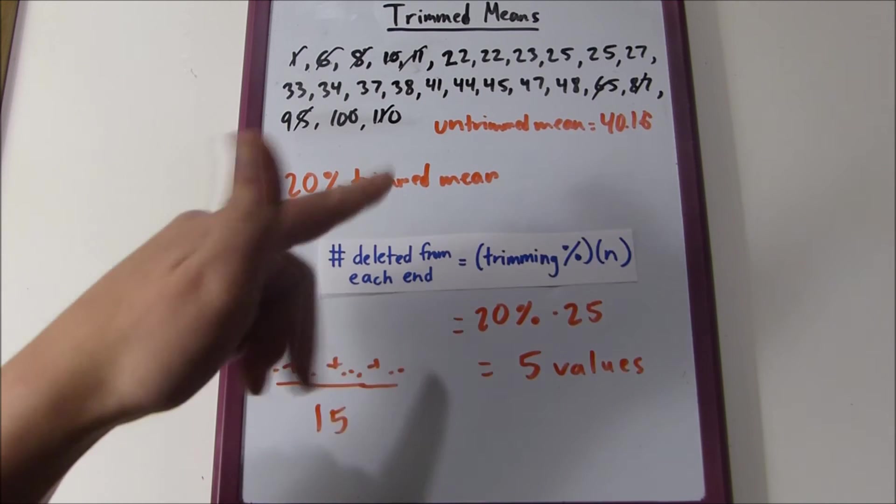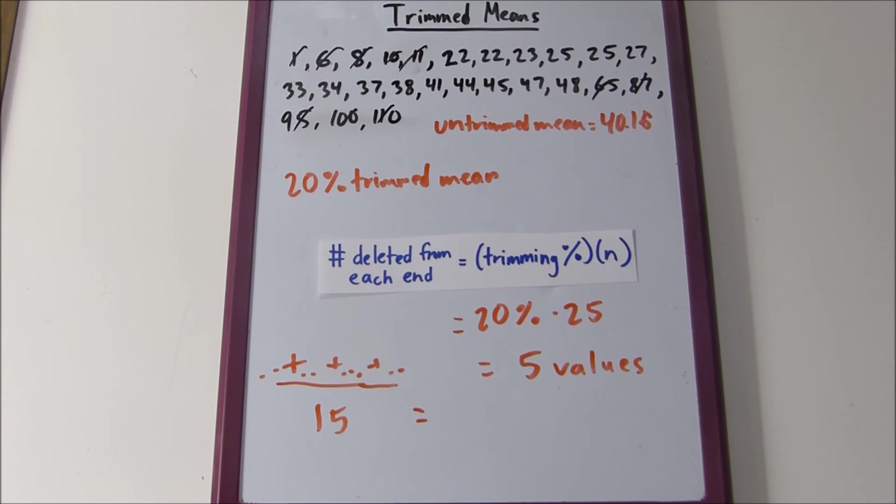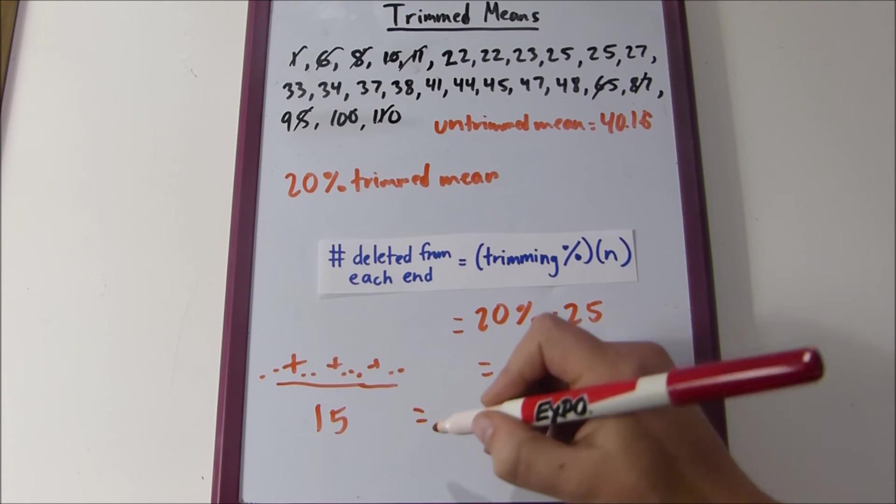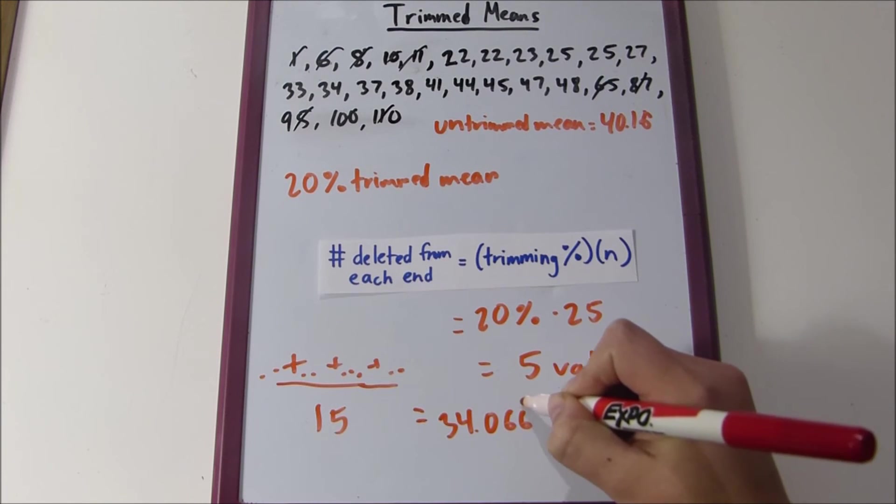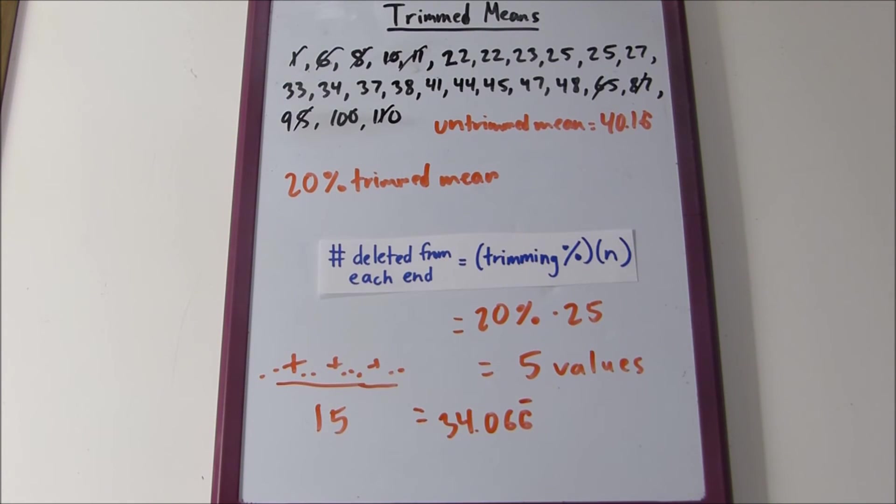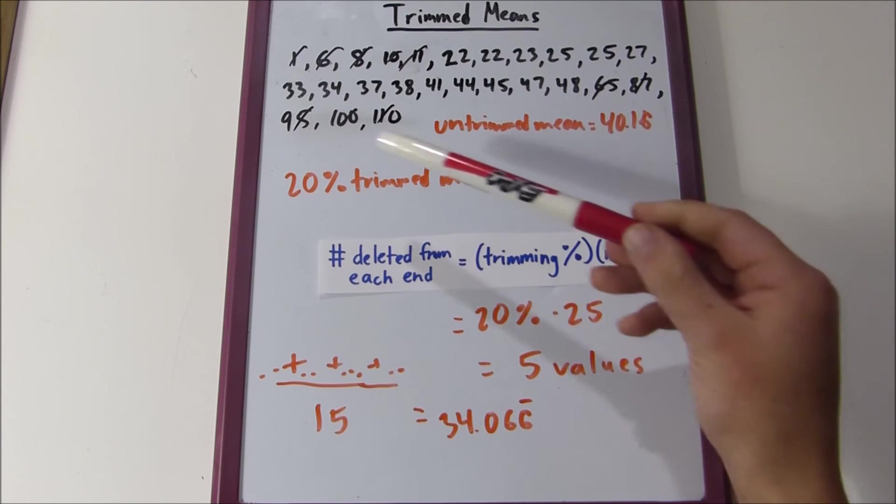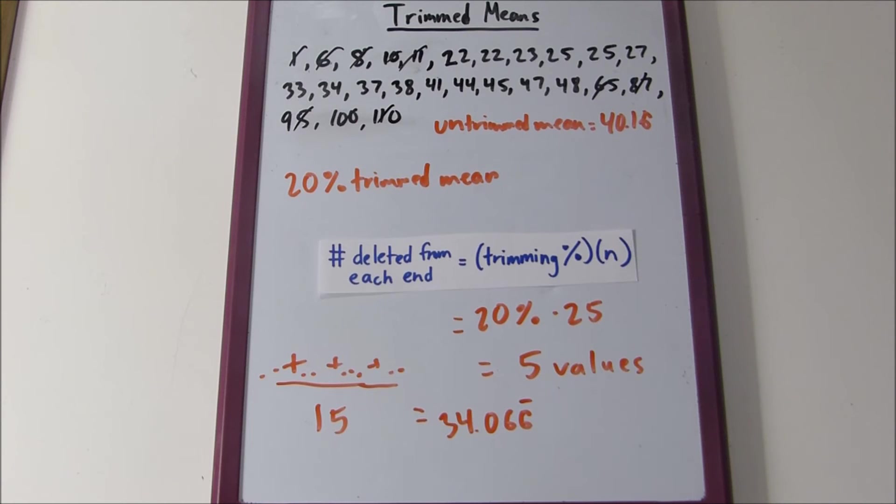I added them all up and our 20% trimmed mean ended up being 34.066 repeating. You can see that this trimmed mean is a lot less sensitive to the outliers. That was the whole point of doing it - we wanted to find what our mean would be if we didn't have all these random values on the end.